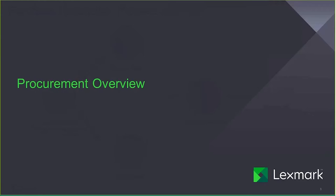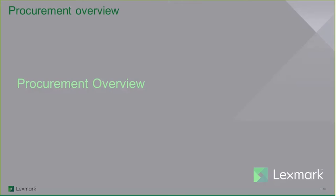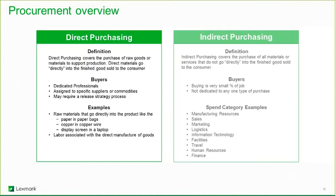In terms of procurement, there are two major spending categories. Direct spend covers the purchase of raw goods and materials to support production. Because these go directly into finished goods sold to the customer, this is usually covered through the applications the customer is using, such as SAP.